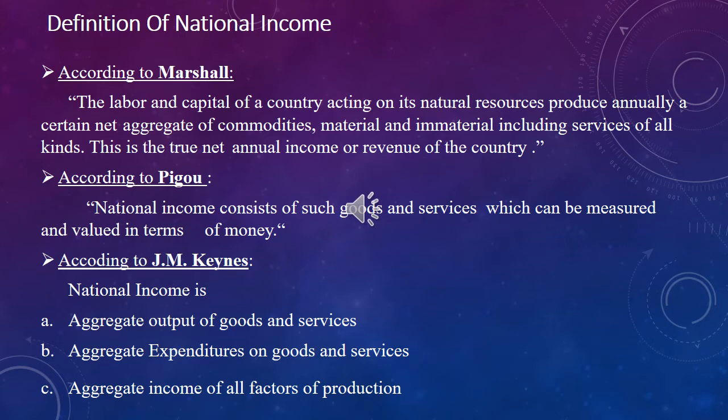J.M. Keynes defined national income in a different way. According to him, national income takes different forms. On one side, national income is the aggregate output of goods and services. On the other hand, national income is the aggregate expenditure on goods and services. And it also takes the form of aggregate income of all factors of production.